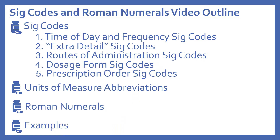I'll start with an outline of what's going to be covered in this video. First we'll look at SIG codes — some general information and also the five categories of SIG codes which will be covered in detail. Then we'll look at the units of measure abbreviations, Roman numerals, and then we'll give several examples.